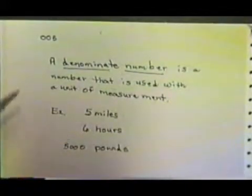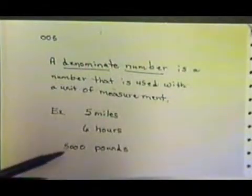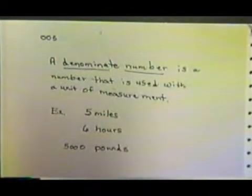For example, 5 miles, 6 hours, 5,000 pounds. Much of our work with numbers in our everyday lives involves denominate numbers.